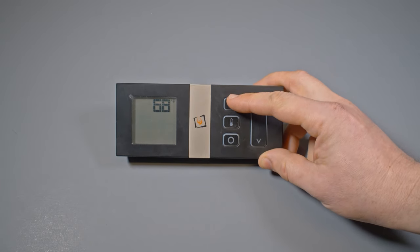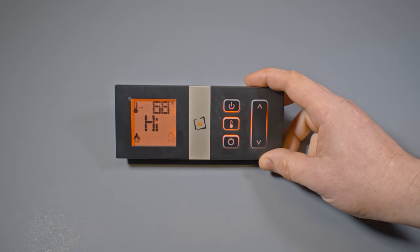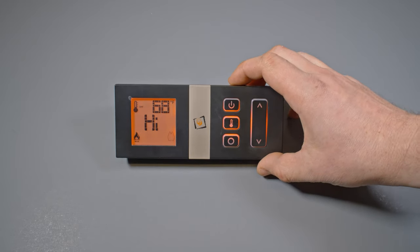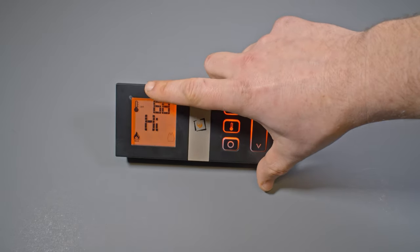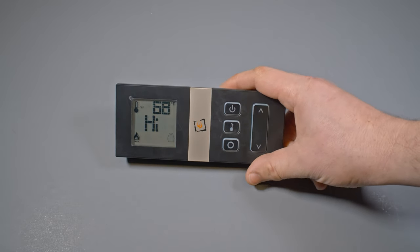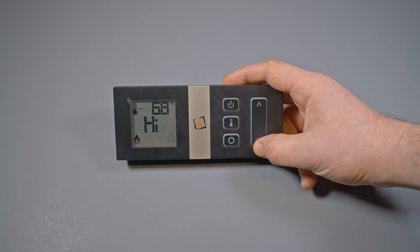So first thing that we are going to do is we are going to go ahead and click this power button here, and we will go over some of the operation. Obviously, when I click that button on, the screen illuminates. And in the top left corner, you'll actually see it says on, or sometimes it may just say off right next to the thermostat there.